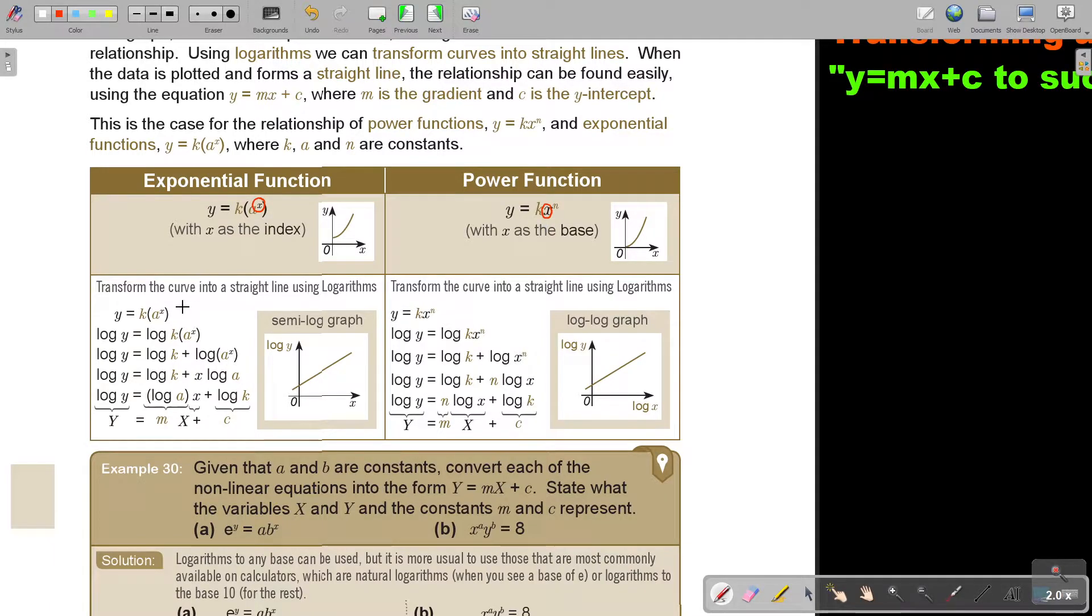So basically, if we take this and we transform, this is a curve. We can make this curve a straight line by taking logs on both sides and then follow the rules of the laws of logs. So I take log on both sides. Remember, there's a multiply. What is the law, the power law? So it's going to be log k plus log ax. Remember, with the multiply, one log word, but with the plus, two log words.